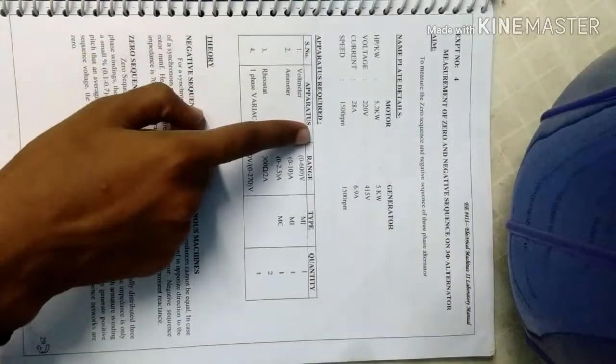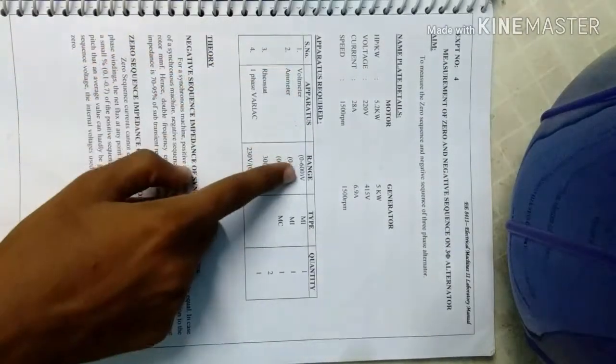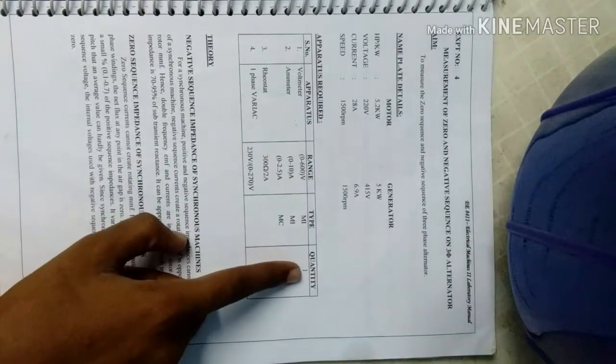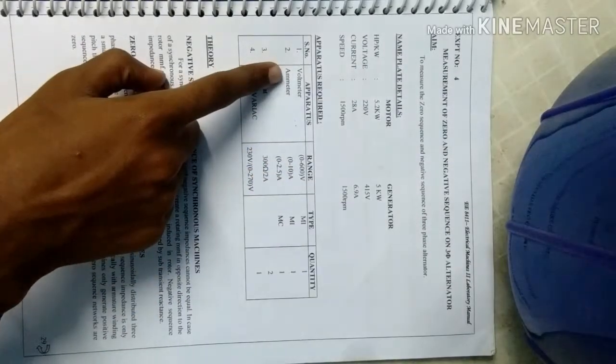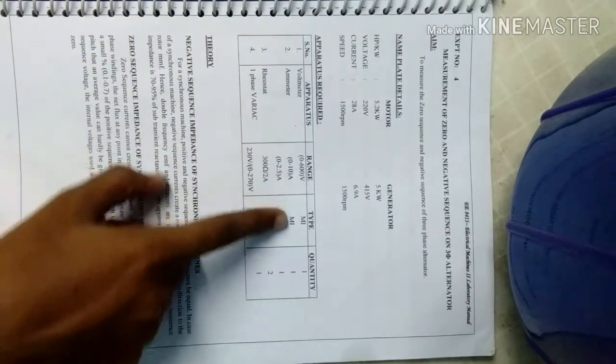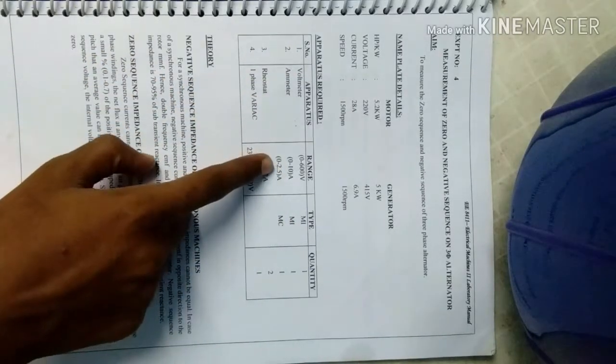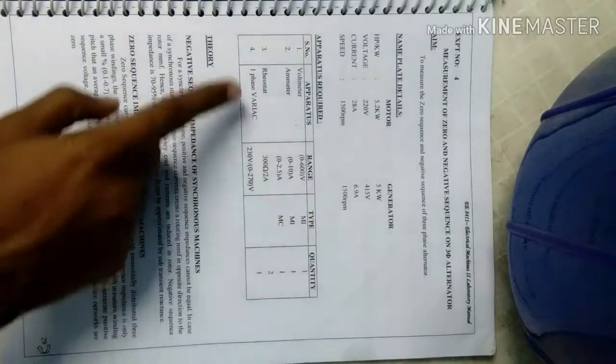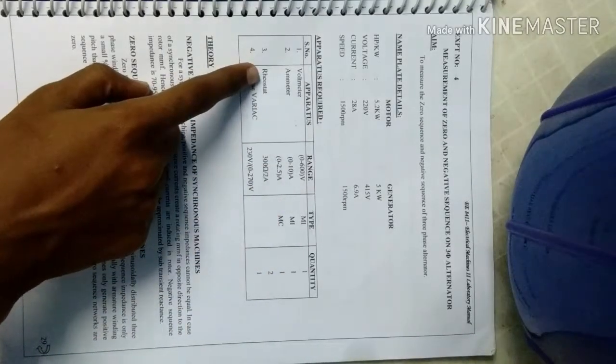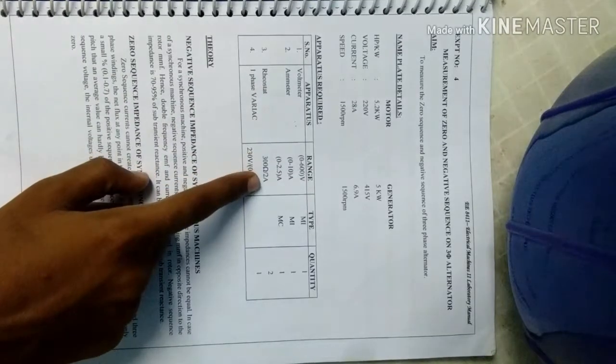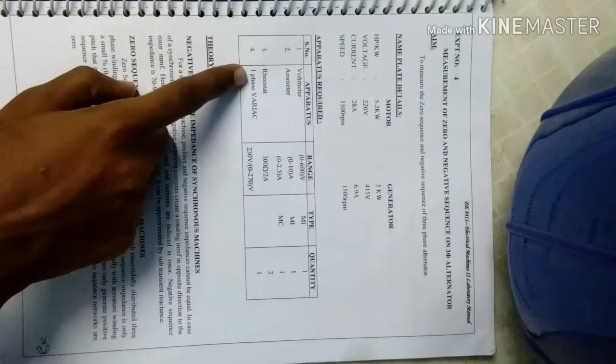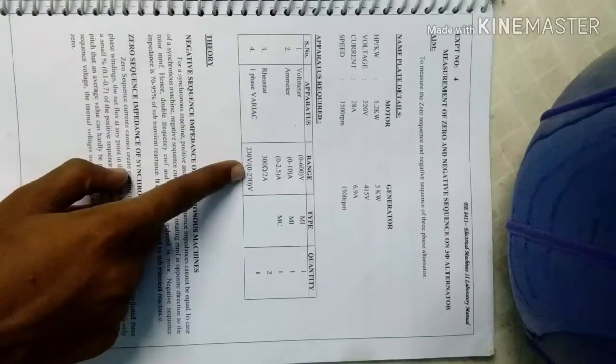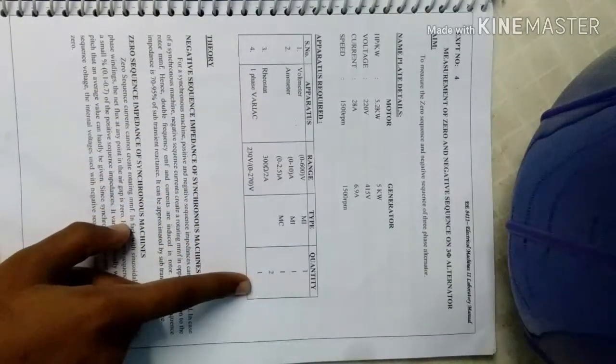First, the apparatus required are voltmeter 0 to 600 volt, MI quantity 1, and then ammeter 0 to 10 ampere MI and 0 to 2.5 ampere MC each one. And then a rheostat 300 ohm 2 ampere, and one phase variac 230 ohm 0 to 270 ohm.